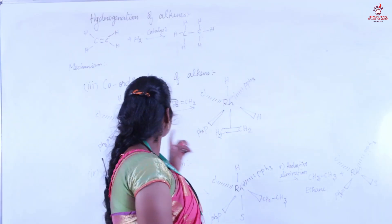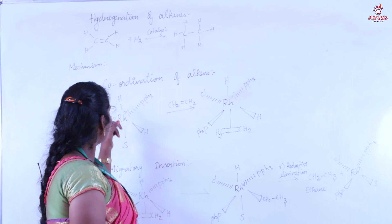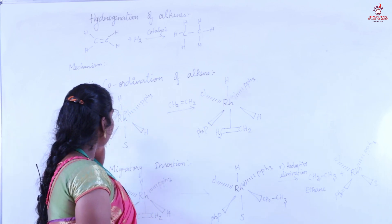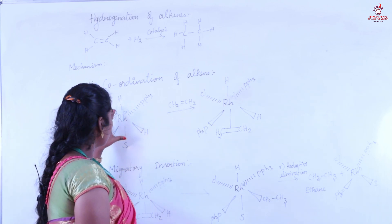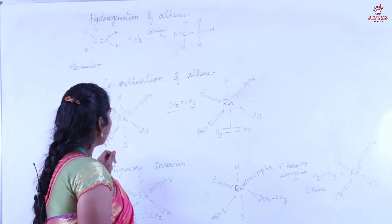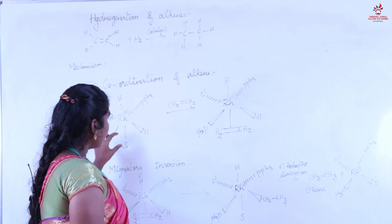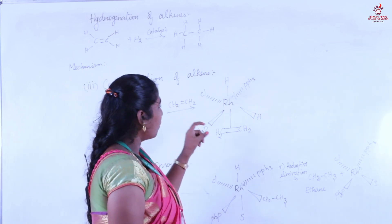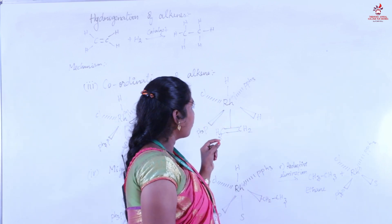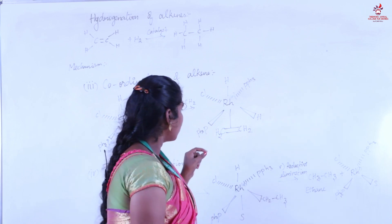Now we see the third step: coordination of alkene. Here the rhodium catalyst is in six-coordination number. The alkene is added to this rhodium catalyst — the solvent is replaced by the alkene compound. This six-member coordinate rhodium catalyst is formed, with rhodium in the plus three oxidation state.